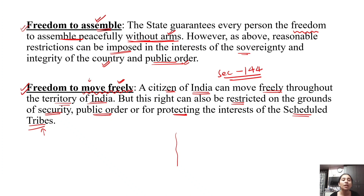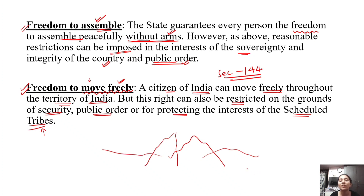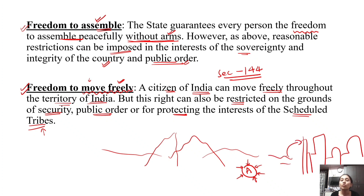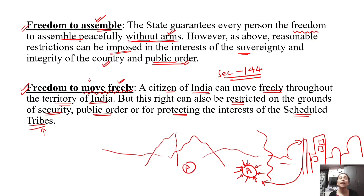In which cases can this right be restricted? It can be restricted in the interest of our country's security, public order, or to protect scheduled tribes. For example, if there is a natural area where Tribe A lives and it is a protected area, then even though you have the fundamental right to move freely, you cannot move freely in that protected tribal area.